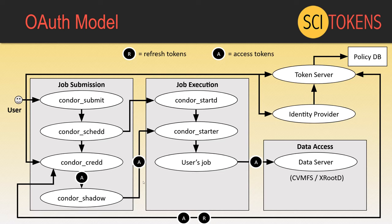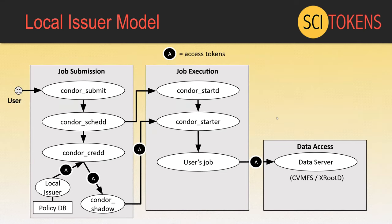We've also found it valuable to have a simpler model called the local issuer model. In the two demos today, Brian Backerman will show an OAuth example and Derek Weitzel will show a local issuer example. In the local issuer model, Condor CredD itself has a private key to issue tokens based on local policy on the submit node, generating an access token sent along with the job. Since CredD itself generates the access tokens, if a token nears expiration it can generate another one directly — no refresh tokens needed.